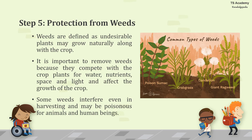The fifth step is protection from weeds. Weeds are defined as undesirable plants which may grow naturally along with the crop. It is important to remove them because they compete with crop plants for water, nutrients, space, and light, which affects the growth of the crop. Some weeds interfere with harvesting and may be poisonous for animals and human beings. Common examples include poison sumac, crab grass, and giant ragweed.